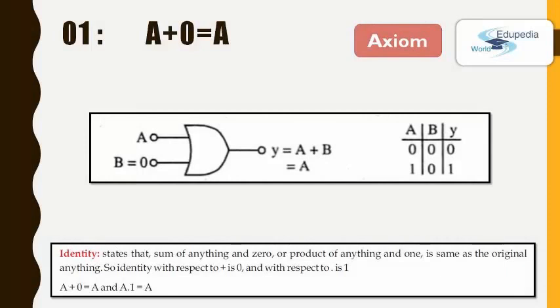A plus 0 equals A. This means for an OR gate, if one input is always 0, the output would be always the value of the other input. We call this law, identity law. It states, the sum of anything and 0 is same as the original anything. By looking at the truth table, you can see the correctness of this law.